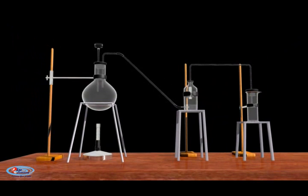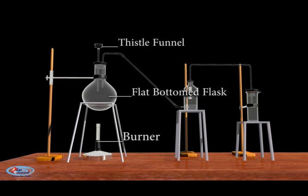For the preparation of HCl gas from a salt, we need reactants sodium chloride and concentrated sulfuric acid. We need apparatus like flat bottom flask, thistle funnel, burner, and beakers.